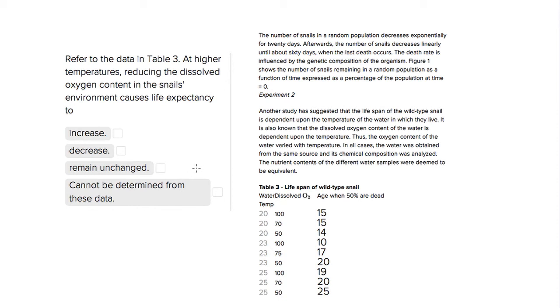This is Sophie Heller and this is an ACT science question. The question is asking us to look at Table 3 and determine, at higher temperatures, reducing the dissolved oxygen content in the snail's environment causes life expectancy to do what?